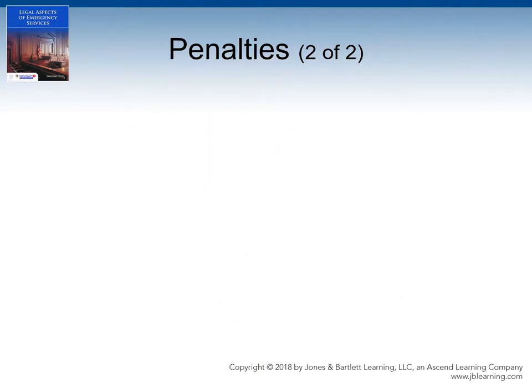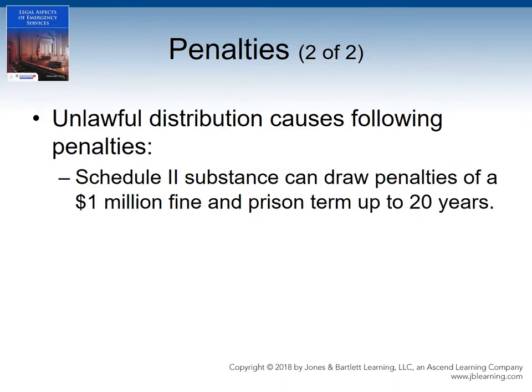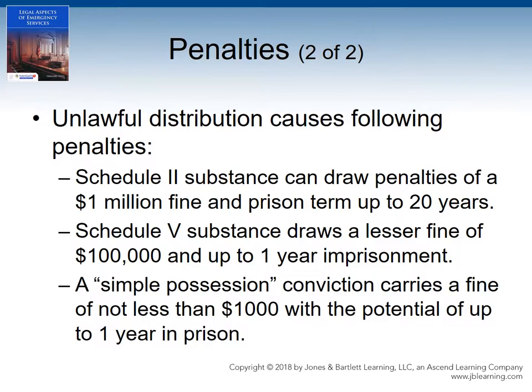To put some of these penalties into perspective, the unlawful distribution of a Schedule II substance can result in a $1 million fine and a prison term of up to 20 years, while the unlawful distribution of a Schedule V substance could result in a lesser fine of $100,000 and up to one year imprisonment. Even a simple possession conviction is serious, with a fine of not less than $1,000 and the potential of up to one year in prison.